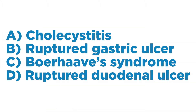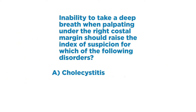Let's look at the four choices: A, cholecystitis; B, ruptured gastric ulcer; C, Boerhaave syndrome; D, ruptured duodenal ulcer. Of the three options I had in mind — liver, gallbladder, lung — the only one that matches is A, cholecystitis. I'm going to go with cholecystitis.